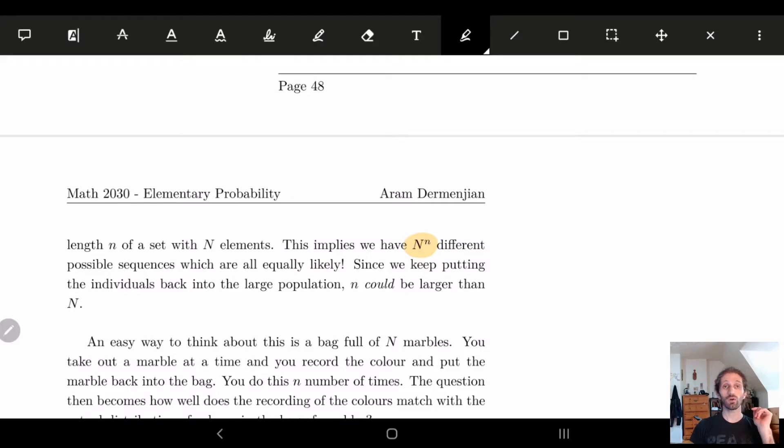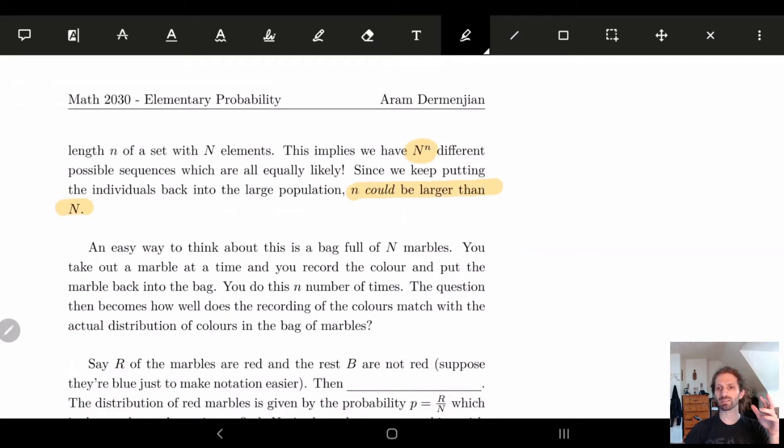And here, one of the big things to note is that since we're putting the number of people back in, n could be larger than big N. We're not stopping this. I can pull, if I have 20 people in my large population, and I pull 600 times, that's okay. That doesn't guarantee that every person will be chosen, though, as a note. So let's look at an example, and then we'll actually calculate this example.